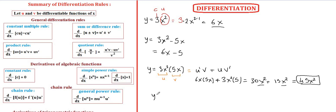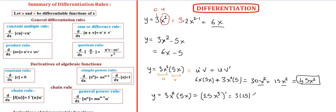To verify, multiply directly: 3 times 5 is 15 and x squared times x is x cubed, giving 15x cubed. Now differentiate 15x cubed using the power rule: bring 3 to the front, multiply by 15, and subtract 1 from the power. So 3 times 15 is 45, giving 45x squared — equal to our product rule result, confirming both methods agree.